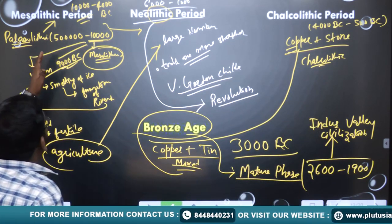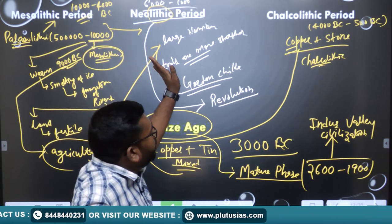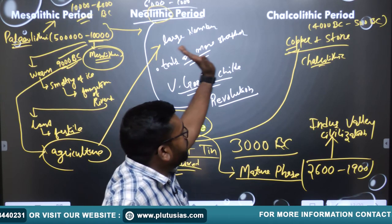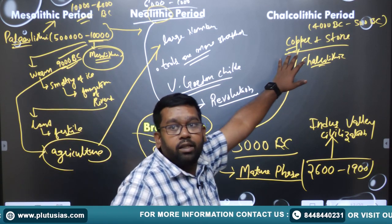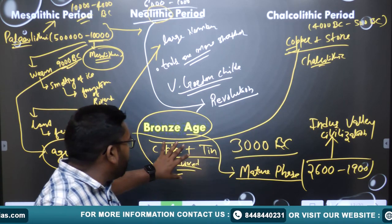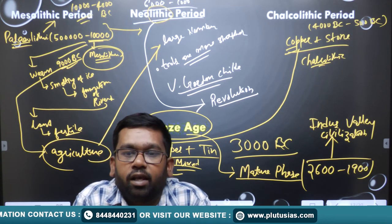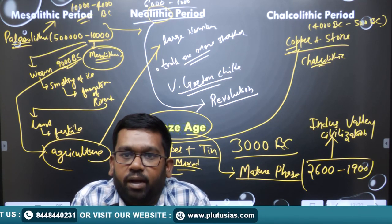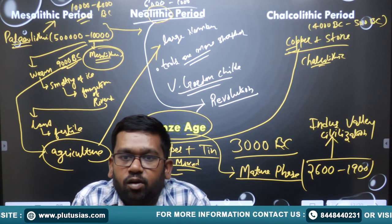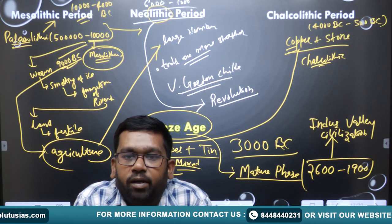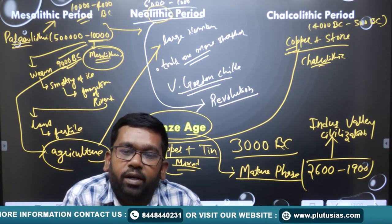To summarize: the people dependent on advanced stone tools were known as Mesolithic and Neolithic people. Then they transferred to the Chalcolithic period, using stone and copper together. From there they moved to using copper and tin, giving rise to the Bronze Age. One of the best examples of Bronze civilization in India is the Indus Valley Civilization.